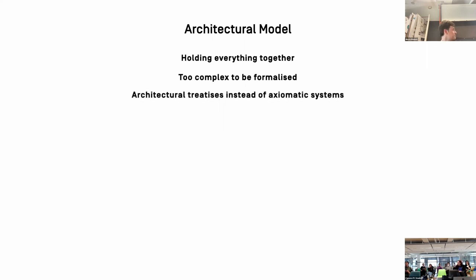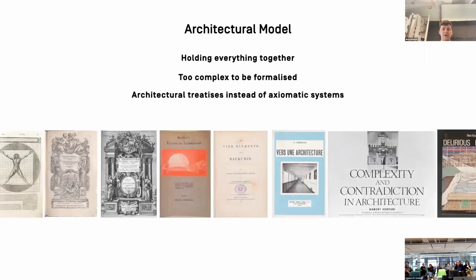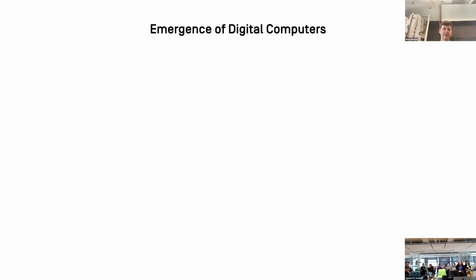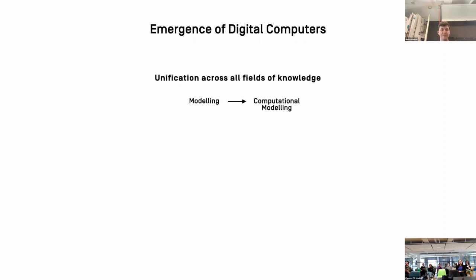Thus the notion of an architectural model was developed in writing — from Vitruvius, Alberti, Palladio, Boullée, Semper, Corbusier, Venturi, Koolhaas, Eisenman. The development of digital computers in the 1950s invoked a unification across all fields of knowledge, so what used to be modeling in a field quickly turned into computational modeling. My question is: what happened to architecture?